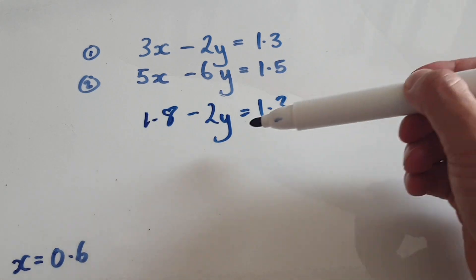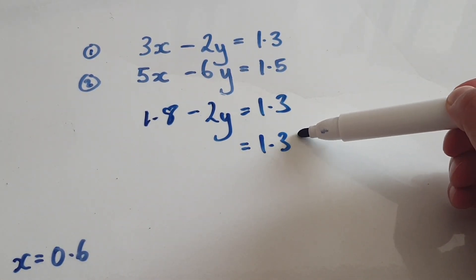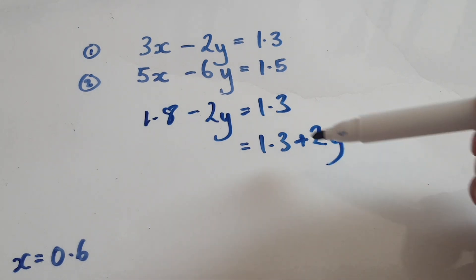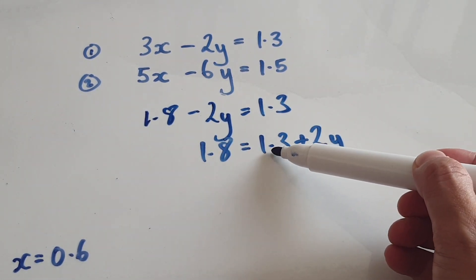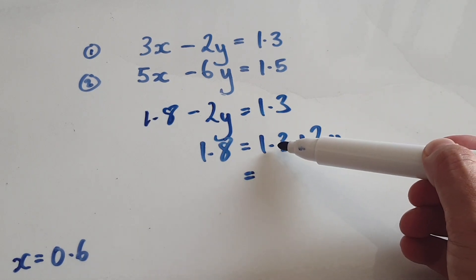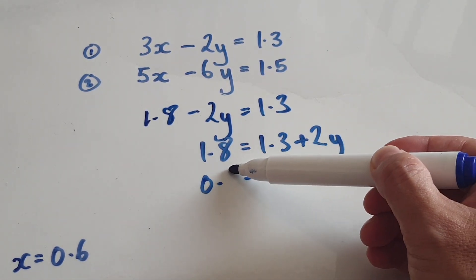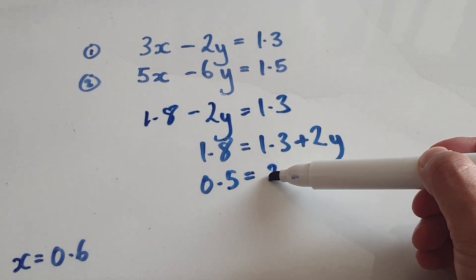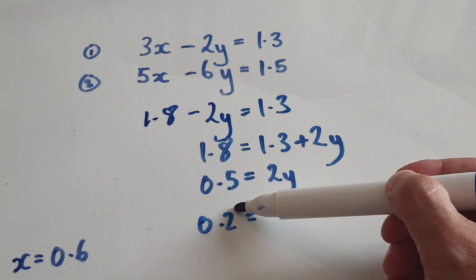So add 2y to both sides. Let me just turn it into a positive. And then take away 1.3 from both sides. That would be 0.5 equals 2y. Divide everything by 2, so that would be 0.25.